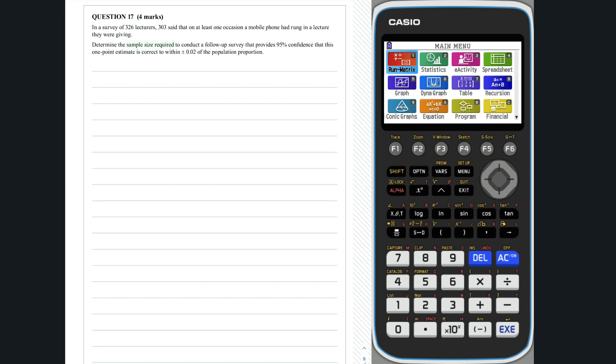Question 17, we want to determine the sample size required such that the point estimate is correct to within plus or minus 0.02 of the population proportion with 95% confidence. This tells us that our margin of error is 0.02. So, we can solve for n in the following equation.